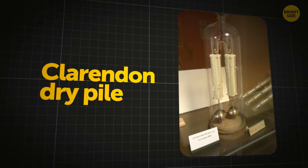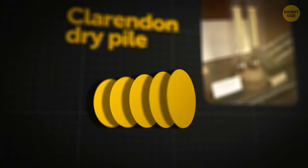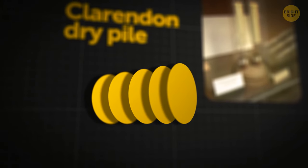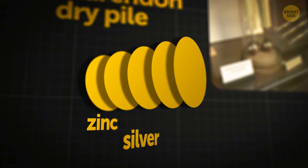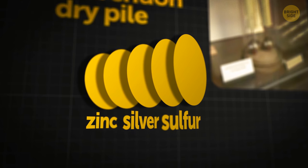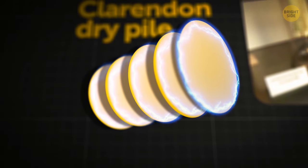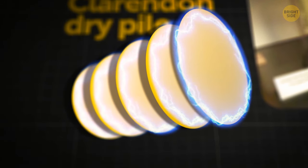Its alternative name is the Clarendon Dry Pile. This is because the battery is made from alternating disks of zinc, silver, sulfur, and other materials. That's the pile in the name. When materials are stacked up like this, they generate low electric currents.